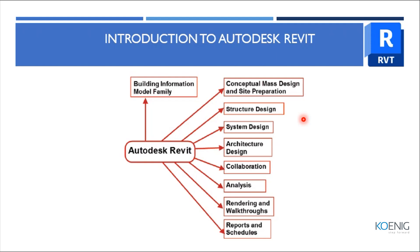Revit also maintains bidirectional associativity between various objects in the 3D building model, meaning if an object — say a door or window — is changed in one view, that change propagates to all connected views. From Revit you can make structural design, system design, architectural design, collaborate, do analysis, renderings, generate reports and schedules — everything from start to end.